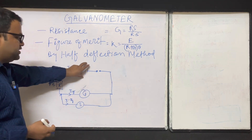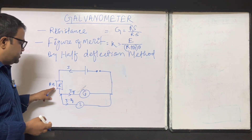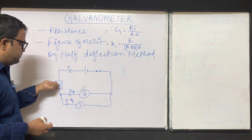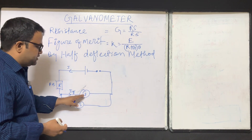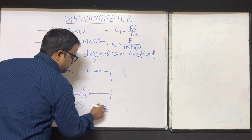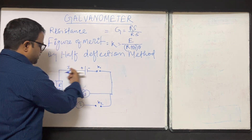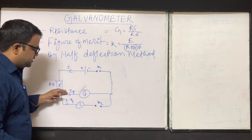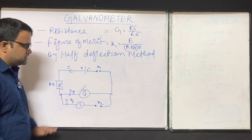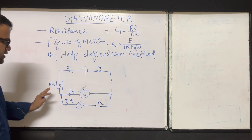Here is the circuit diagram. A battery is there, and this is R — a resistance box. Current from here will flow through this. This is your galvanometer resistance G and the galvanometer. Current will pass through this. We will keep another key here named K2, and this one is K1. A current will flow like this, and if ig current flows through this branch, then i minus ig current will flow through the other branch. The circuit diagram and the currents should be clear.